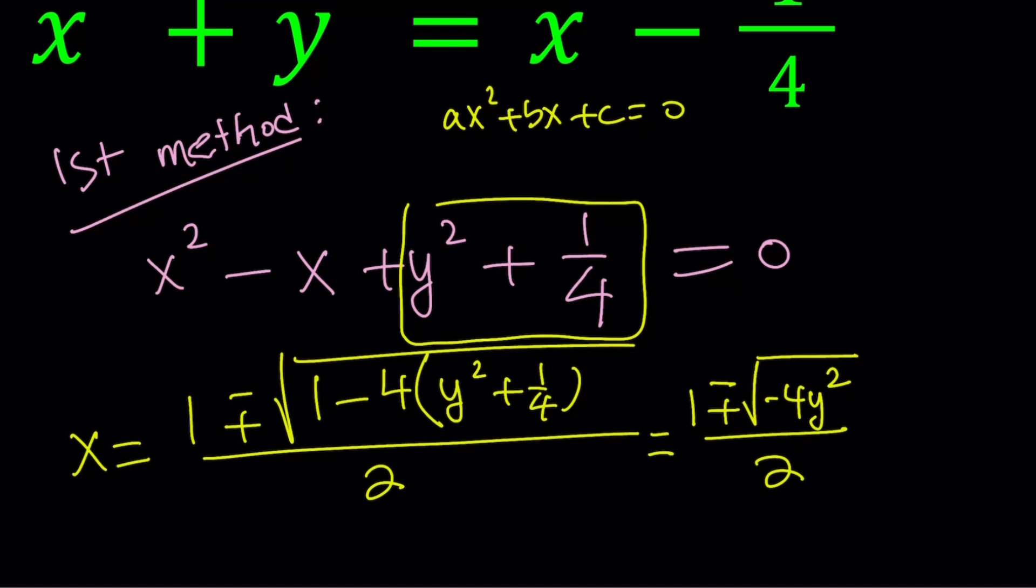This means our discriminant is negative 4y². In order to get real solutions, the discriminant needs to be non-negative. So negative 4y² needs to be greater than or equal to zero. If you divide by negative four, y² is going to be less than or equal to zero.